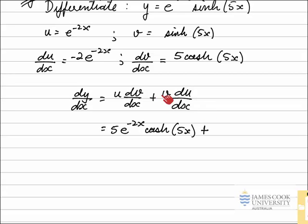Plus v times du dx, v is the sinh function, du dx is negative 2 times e to the negative 2x. So I will make that negative 2 e to the negative 2x multiplied by sinh of 5x.